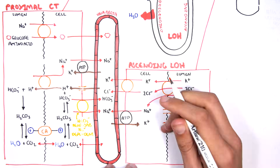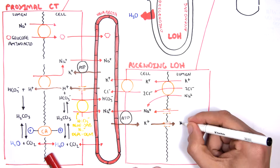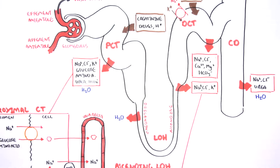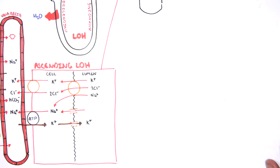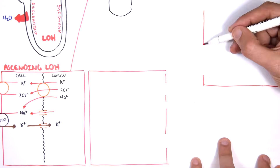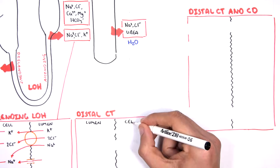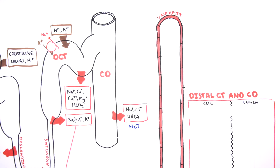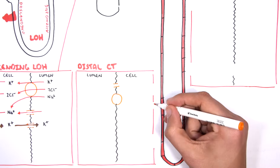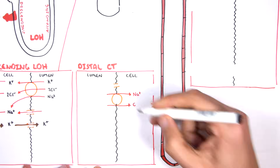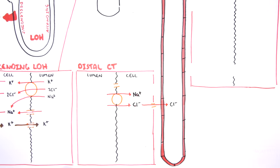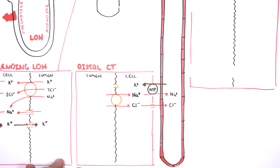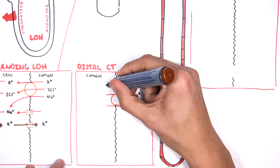On the apical surface of the loop of Henle cells, there are passive channels which allow sodium to enter the cell from the lumen and also potassium to enter the lumen from the cell. In the distal convoluted tubule, sodium and chloride get reabsorbed via a cotransporter. Chloride has its own channel back into circulation, while sodium gets exchanged for potassium via the sodium-potassium ATPase on the basal surface. Potassium can passively move through into the lumen of the nephron from the cell.